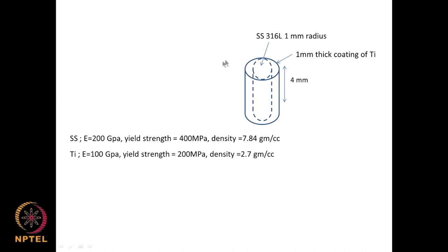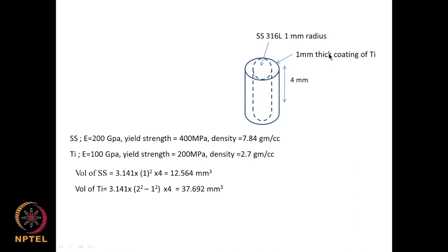To calculate properties of this composite: volume of stainless steel = π × r² × h = π × 1² × 4 = 12.56 mm³. Volume of titanium (a tube with outer radius 2 mm, inner radius 1 mm): π × (2² − 1²) × 4 = π × 3 × 4 = 37.7 mm³. So the stainless steel rod volume is 12.56 mm³ and the titanium tube volume is approximately 37 mm³.